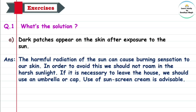In order to avoid this, we should not roam in the harsh sunlight — roam means phirne, and harsh sunlight means kadak unha. If it is necessary to leave the house, we should use an umbrella or cap. Use of sunscreen cream is also advisable.